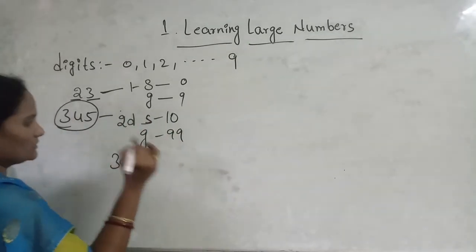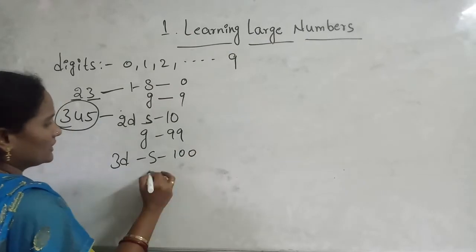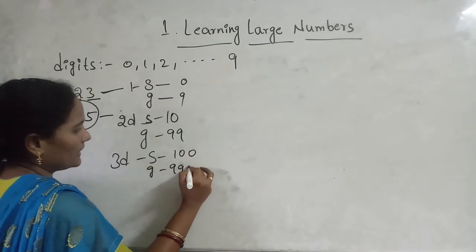Now, in three digit number, smallest number is 100. Greatest number is 999.